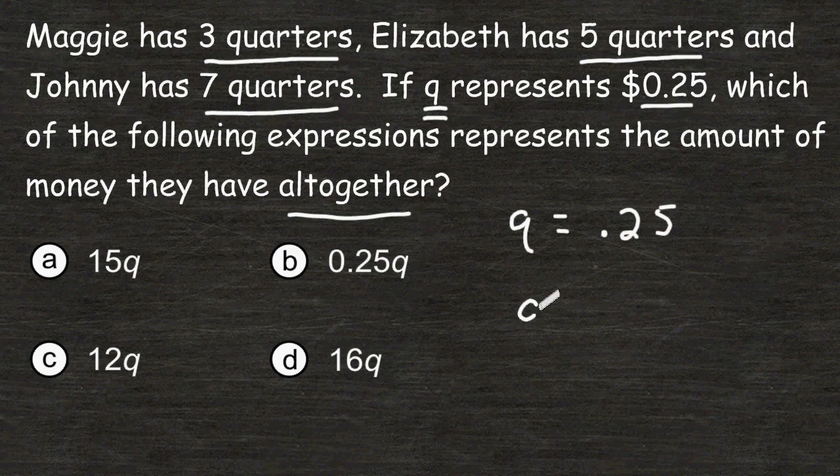So one thing we can do is understand that this letter Q represents 1 quarter. So if I were to stick a number 2 in front of this Q, that would be basically having 2 quarters or doubling 25 cents. So I could write 2 times 25 cents.